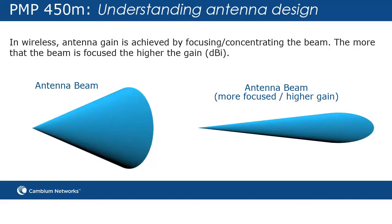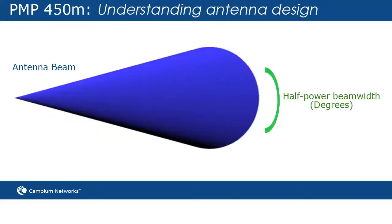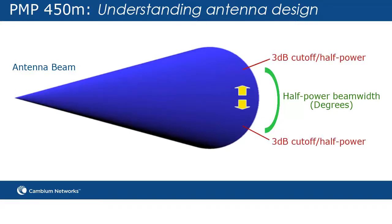In wireless, antenna gain is achieved by focusing or concentrating the beam. The more that the beam is focused, the higher the gain. Beam width typically refers to half power beam width. It defines, in degrees, the distance from the center of the beam out to the point where half of the power, or 3 dB, is lost.